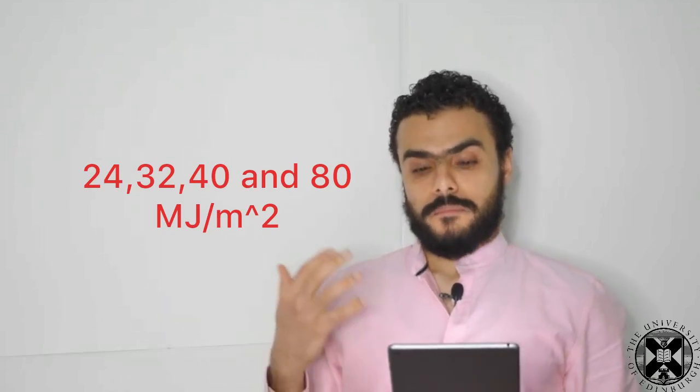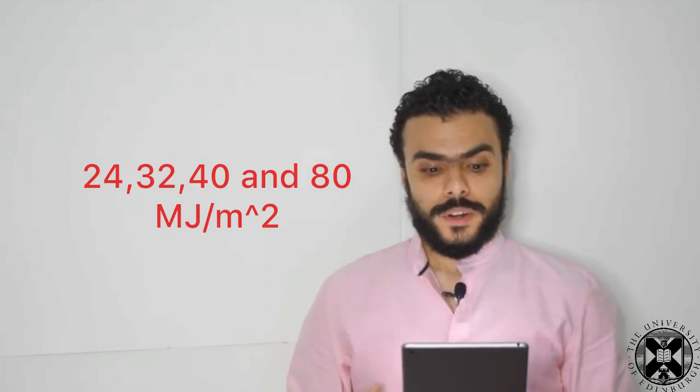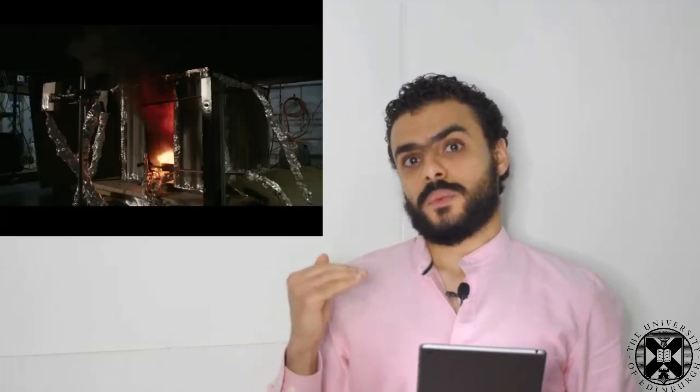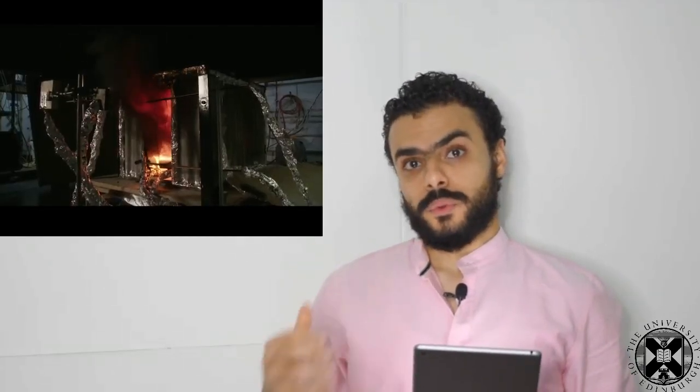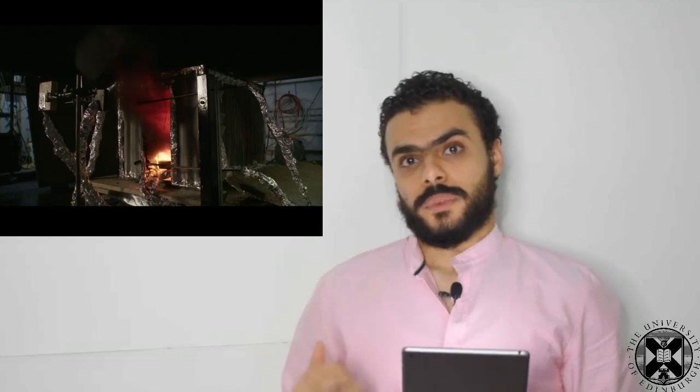So as we said in the introduction, these conditions or these experiments didn't really fit in most of the empirical and theoretical models we have in literature. Therefore, we were not really able to define exactly the amount of fuel load that we need to add in this compartment to reach flashover. So we decided to use a few different fuel loads starting with 24, 32, 40, and 80 megajoule per square meter. We also defined our criteria for flashover to be once we see a sustained external plume from the door or once the gas layer temperature reaches a temperature difference of 525 degrees Celsius.